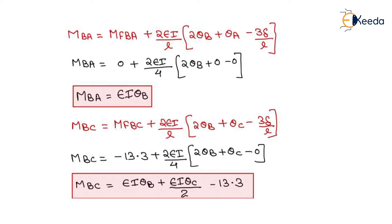For span BA, the equation is MF_BA + (2EI/L)(2θB + θA − 3Δ/L). With θA = 0 and Δ = 0, solving gives MBA = EIθB. For MBC, the equation is MF_BC + (2EI/4)(2θB + θC). With θB and θC unknown and Δ = 0, the result is MBC = EIθB + EIθC/2 − 13.3.